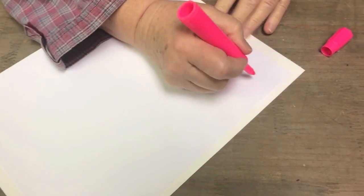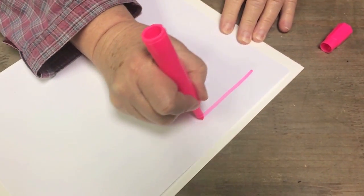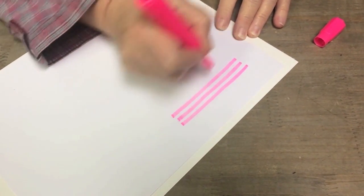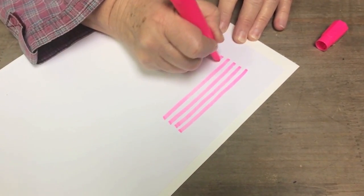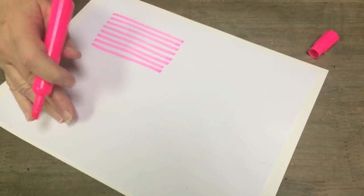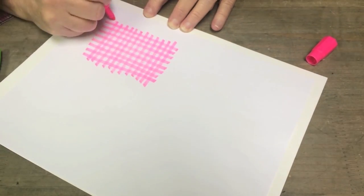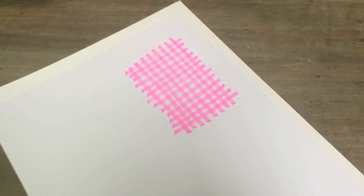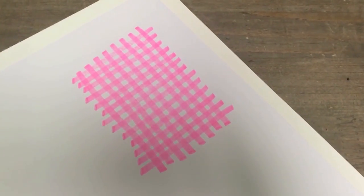First thing we're going to do is draw the simplest kind of plaid. Space your lines out evenly. The white and the pink spaced about the same. I'm doing this freehand. We're going to be freestyling this today. So that's your basic gingham plaid or your tablecloth plaid.